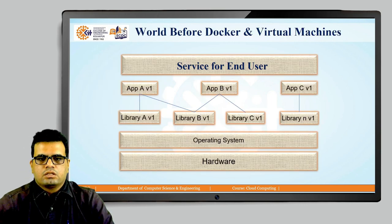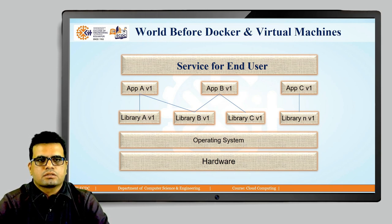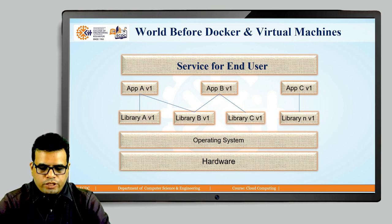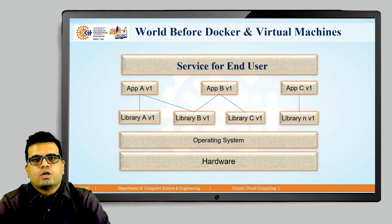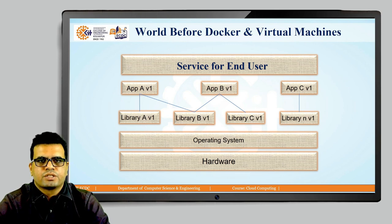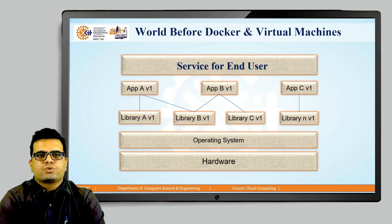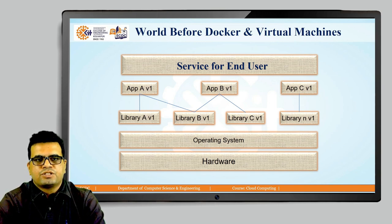This diagram shows how we used to manage applications without containers or virtual machines. The diagram is divided into 5 layers. The top layer represents services for the end user — this is the layer through which the end user accesses services. There is Application A version 1, Application B version 1, and Application C version 1 — different applications the user relies on for day-to-day work.